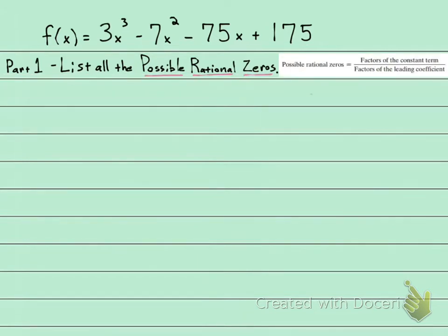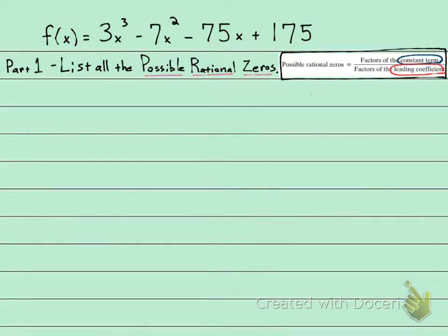Part one: list all of the possible rational zeros. The possible rational zeros are going to be fractions where the numerator is a factor of the constant term and the denominator is a factor of the leading coefficient. The constant term is 175 — that's the number without a variable — and the leading coefficient is 3.